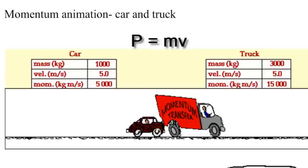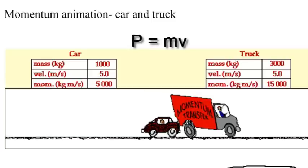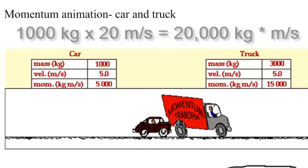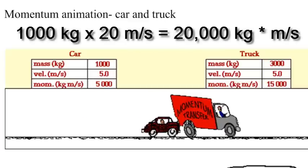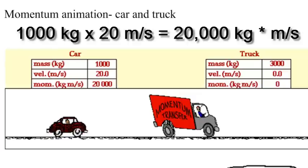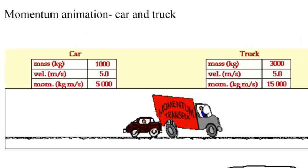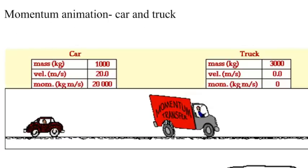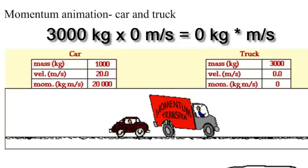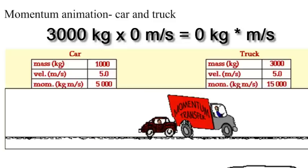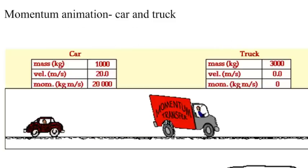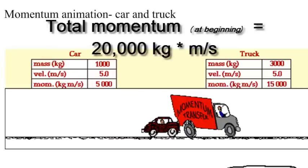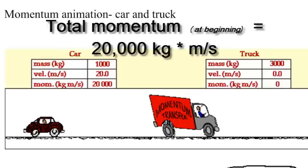Now let's go back and remember the momentum formula. P equals M times V. Well, if we have M times V for the car at the beginning, we have 1,000 times 20, which gives us a total momentum of 20,000. The truck, if you look at the beginning, 3,000 for the mass, 0 for the velocity. Therefore, your momentum will be 0 at the beginning. So your total momentum at the beginning is 20,000 kilograms times meters per second.